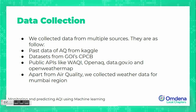We also used public APIs like WAQI, openaq.io, and OpenWeatherMap, which source data from sensors and allow us to make requests to retrieve data. Additionally, we collected weather data such as temperature and humidity, since air quality depends on more than just pollutants. Mumbai's coastal location, wind speed, and various other environmental factors all contribute to elevated AQI levels.